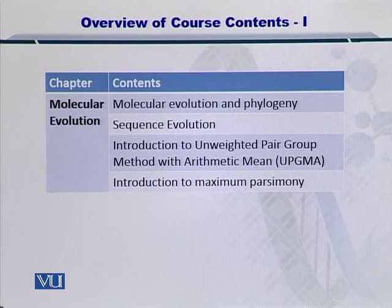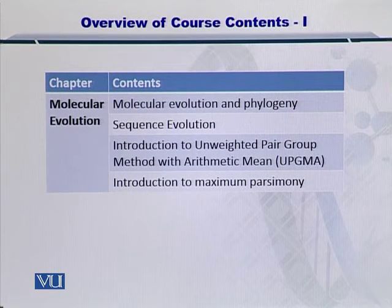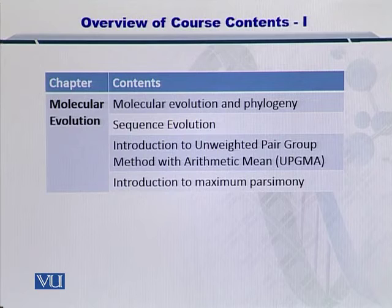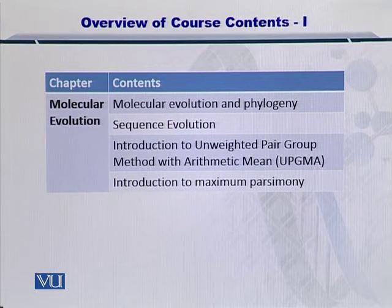In the next chapter, I'll talk about molecular evolution and phylogenetics. I'll start by looking at molecular evolution and phylogeny, followed by sequence evolution. Then I will introduce two algorithms: the first one being the Unweighted Pair Group Method with Arithmetic Mean, or UPGMA, and the second one, maximum parsimony, to construct phylogenetic trees.